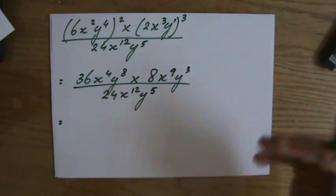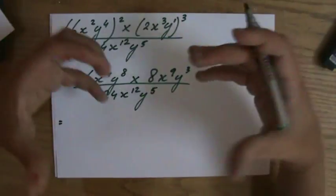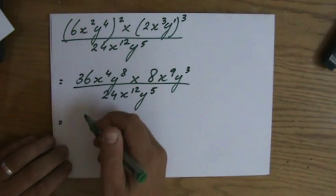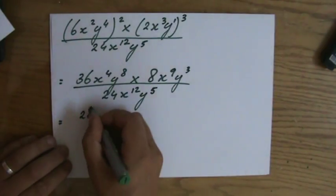Good. That was the third law. Now the first law. Let's simplify the numerator. So we're going to start with 36 times 8, which is 288.